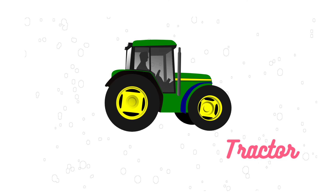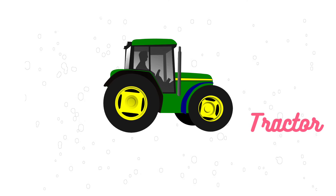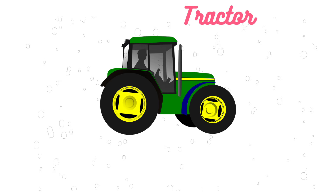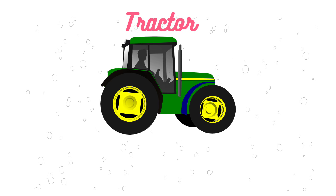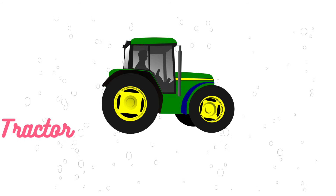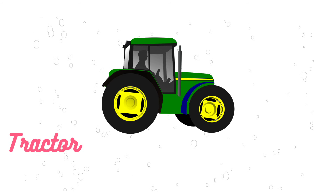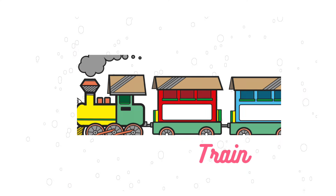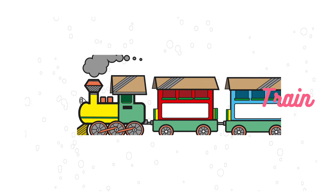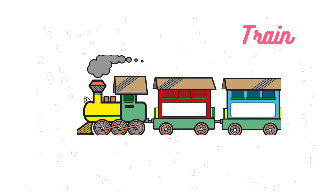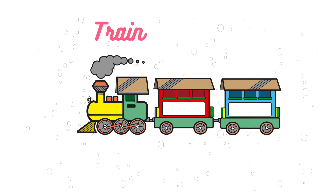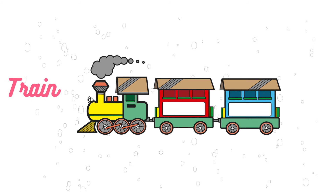Here we see tractor. The name of the vehicle is tractor. What is this? This is tractor. Here we see the name of the vehicle is train. What is this? This is train.